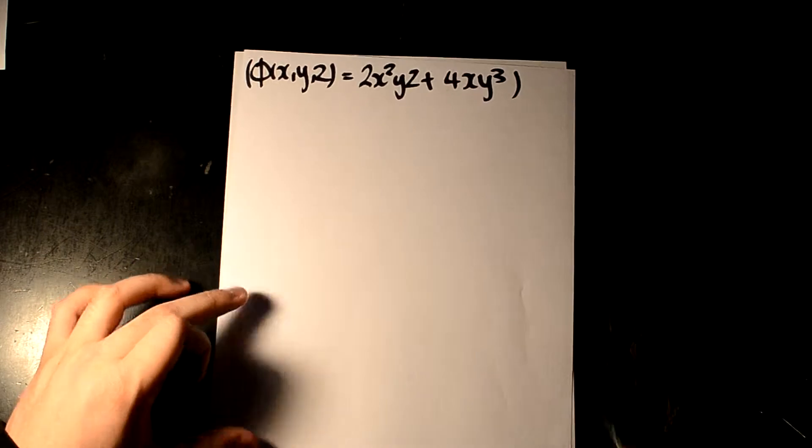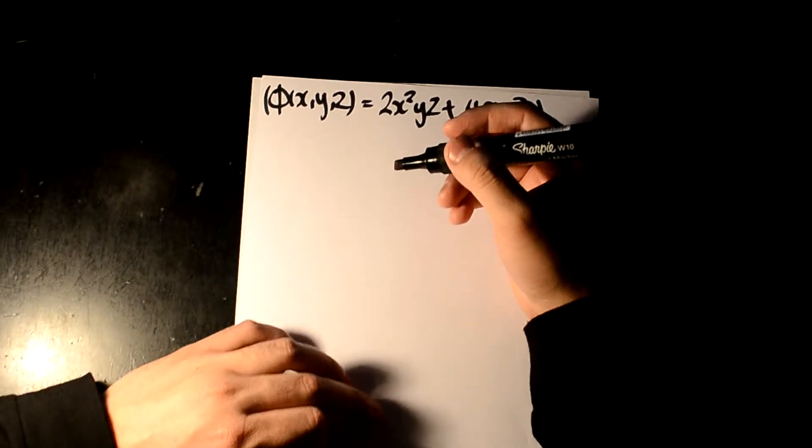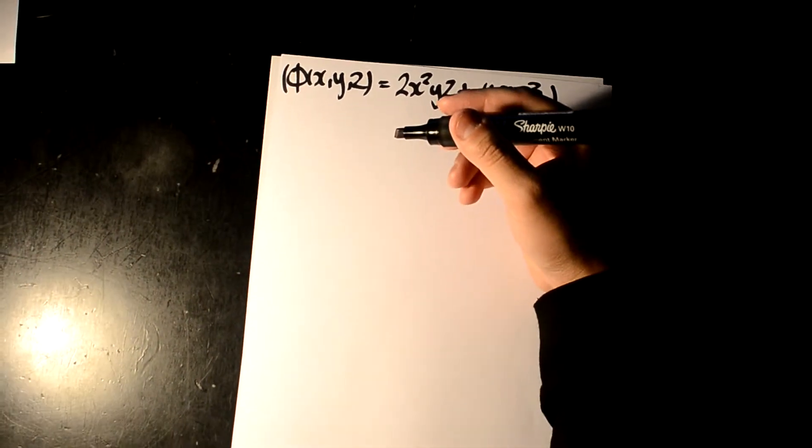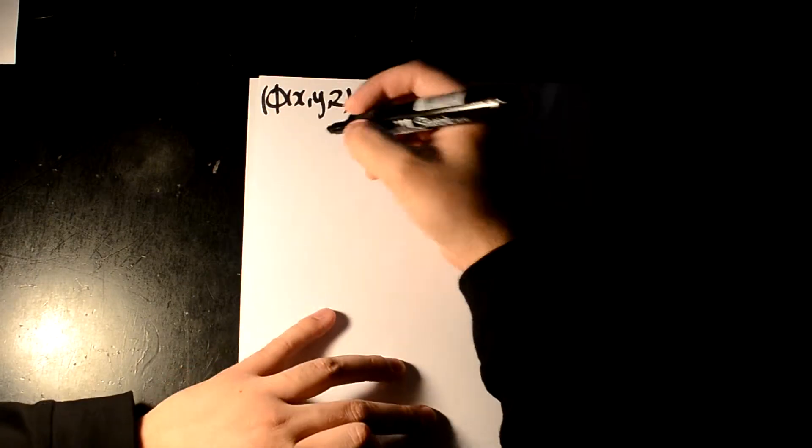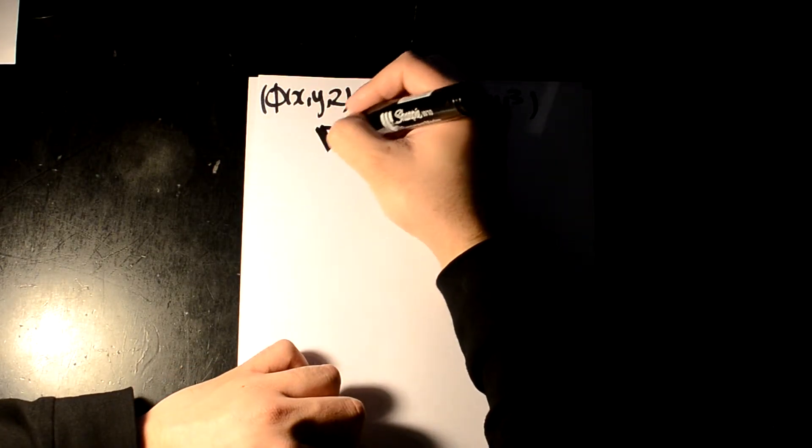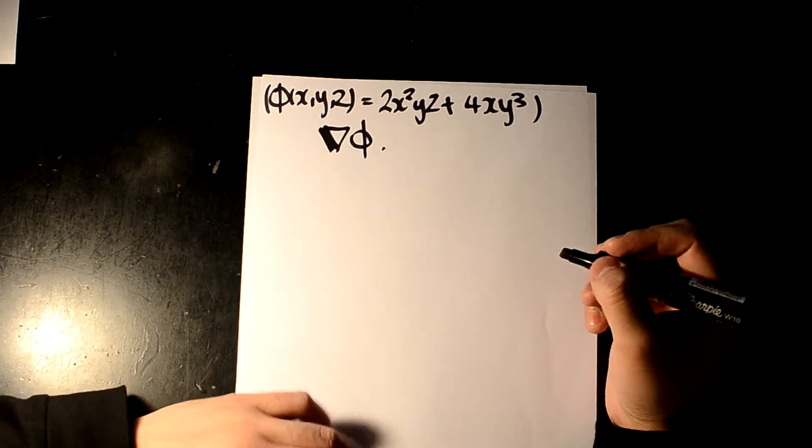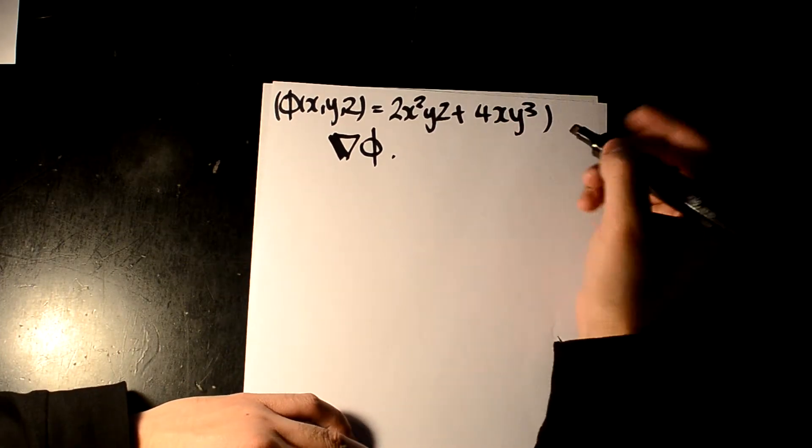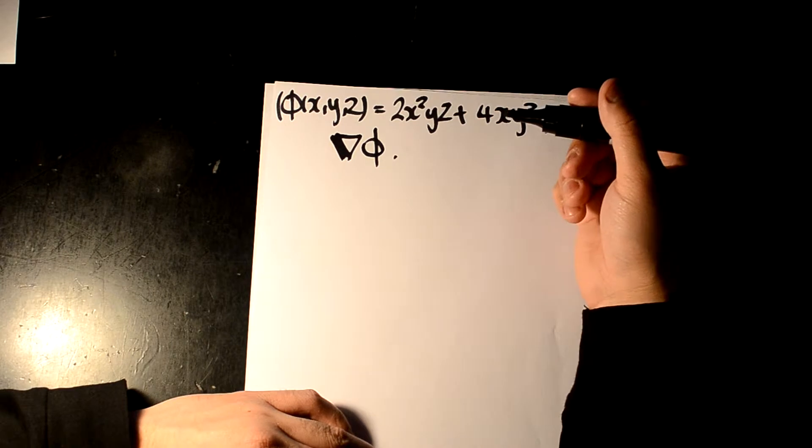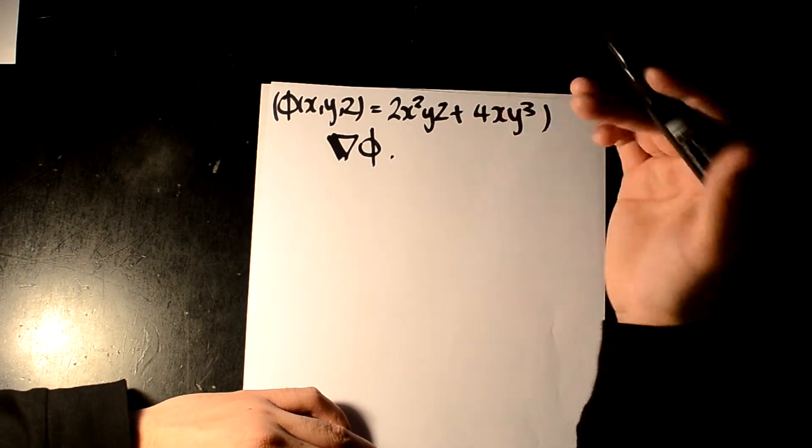And here we're going to be looking at something where they may ask you to find out what is the nabla of phi. That can be one of the questions that's usually asked. In this question, what they're asking you to do is find the derivative of it in terms of i, j, and k.